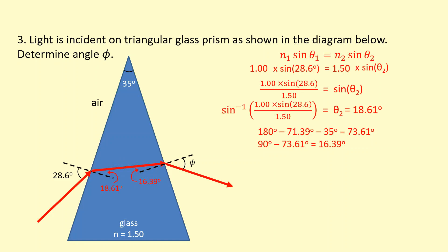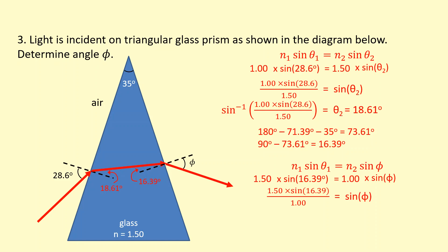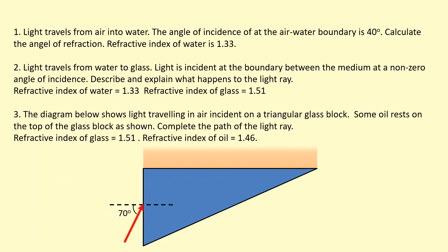Now we apply Snell's law at the second boundary. Going from glass, n1 is 1.50 and the angle of incidence is 16.39 degrees. N2 we're going back into air so it's 1, and we're trying to find angle phi. Rearranging and taking sine inverse, we get phi equals 25.0 degrees.